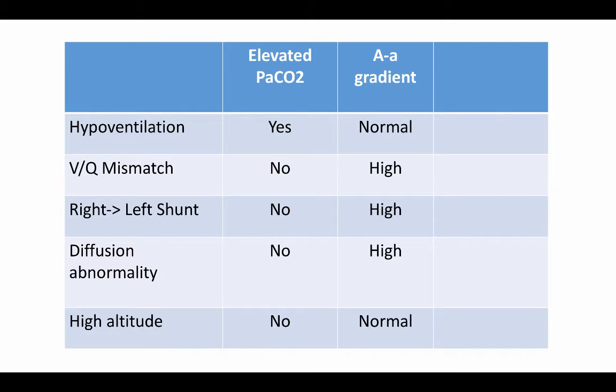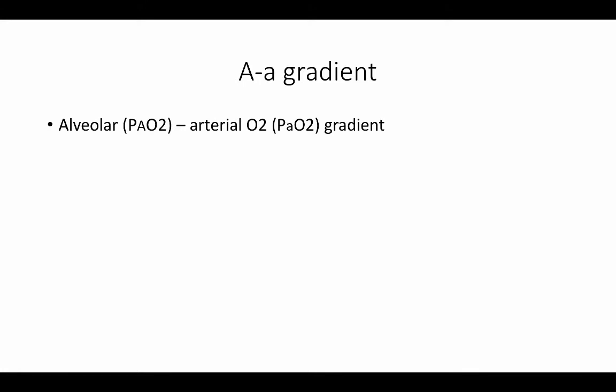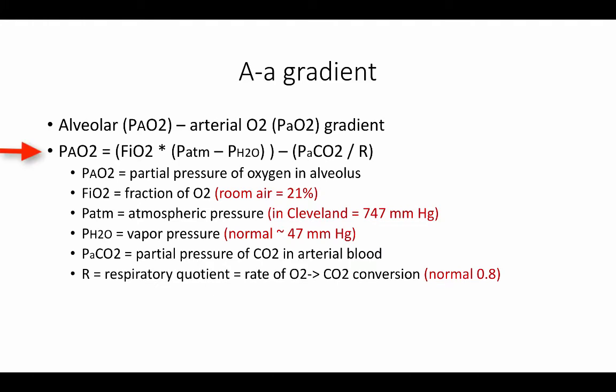The real question though is, does that increase in CO2 explain the decrease in oxygen? This is where the AA gradient becomes important. The AA gradient, or the alveolar arterial oxygen gradient, represents the difference in partial pressures of oxygen in the alveolus versus the arterial blood.